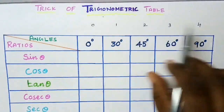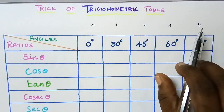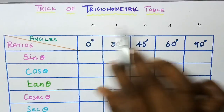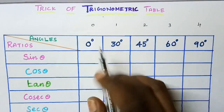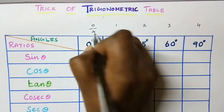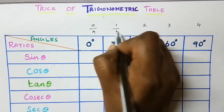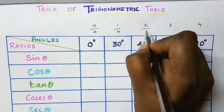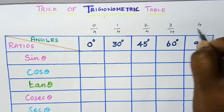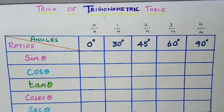Here the largest number is 4, so divide all the numbers by 4. That gives us 2 by 4, 3 by 4, and 4 by 4.